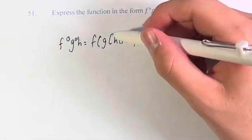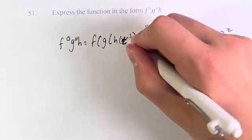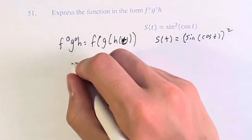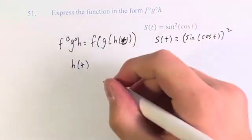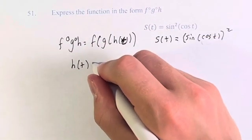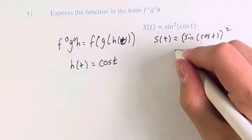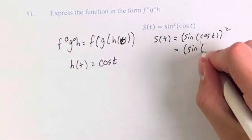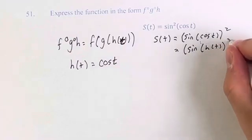We're going to start all the way in here. Remember this is h of t, not h of x. h of t is the innermost, so let's start with where the variable is. We can set h of t equal to cosine of t. Therefore, s of t is equal to the sine of h of t, squared.